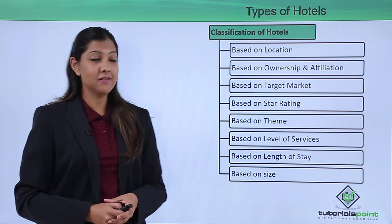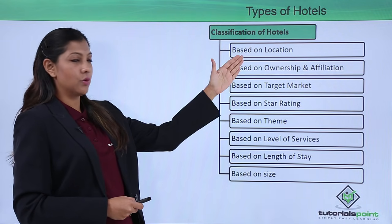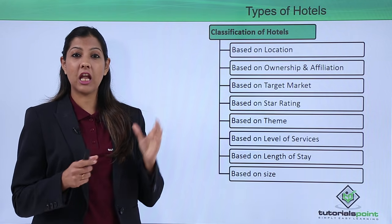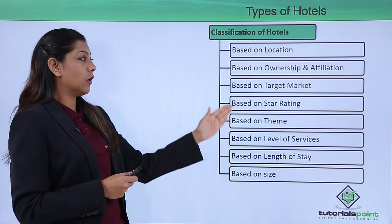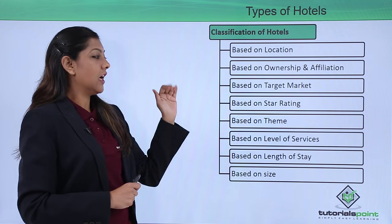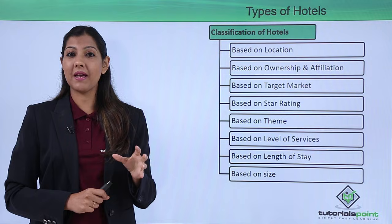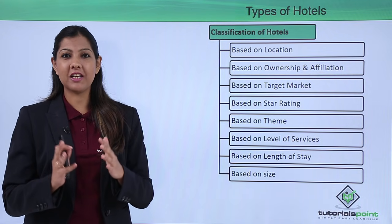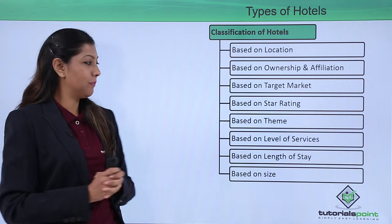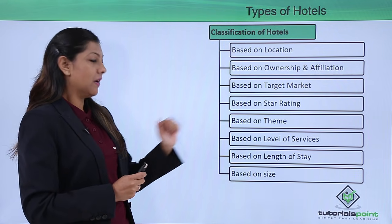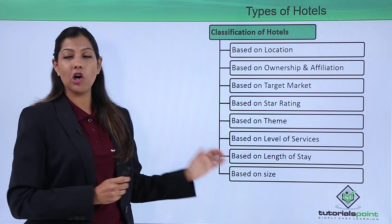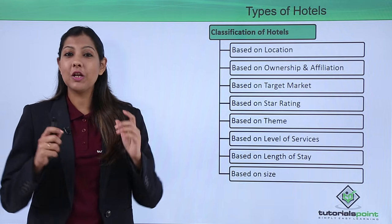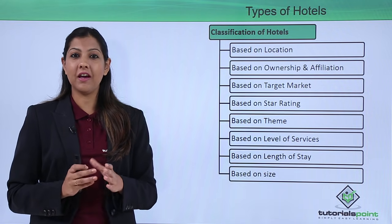Classification of hotels is based on location, ownership and affiliation, target market — as certain hotels allow only a particular community to check in — star rating, theme (such as a kids-only theme or a historical theme), level of services, length of stay, and size. No two hotels are the same; they differ based on these various categories.